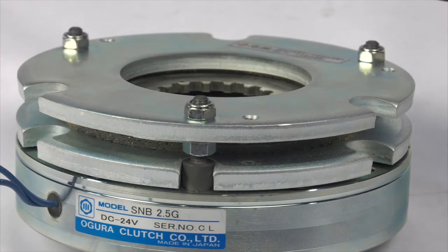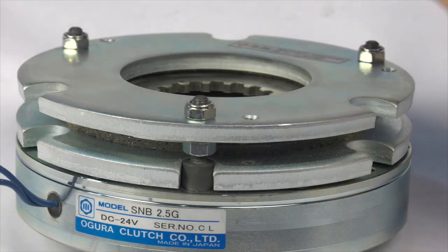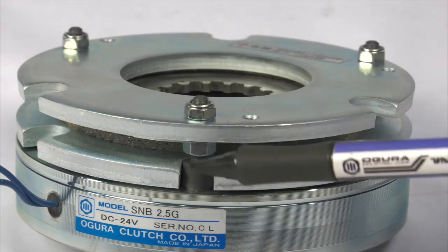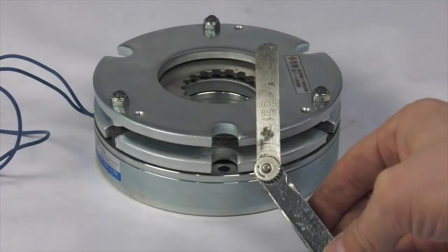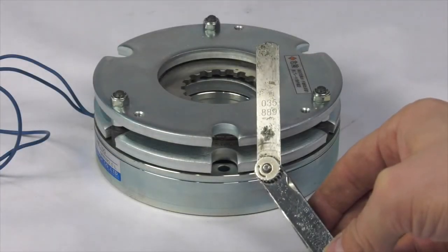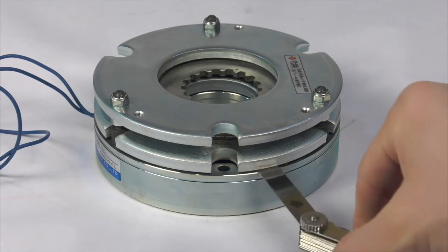To reset the gap, loosen the inner adjustment nuts under the brake cover plate. Tighten the outer nuts until the proper air gap is set, then tighten the inner nuts against the cover plate to set the gap.